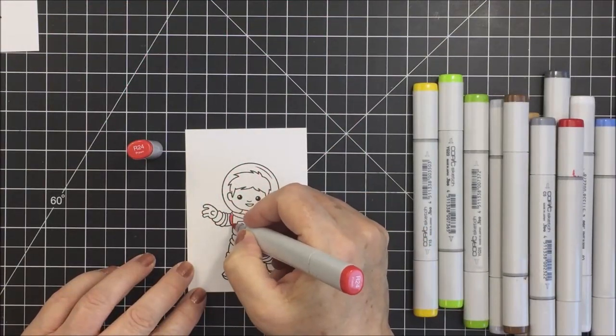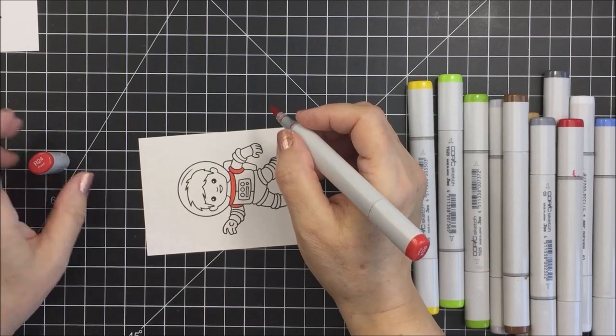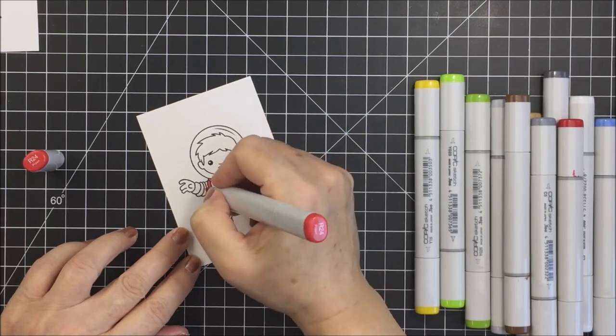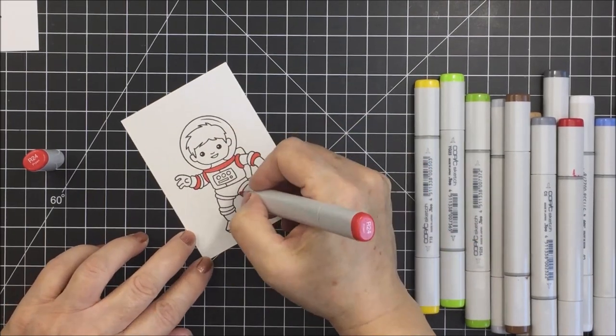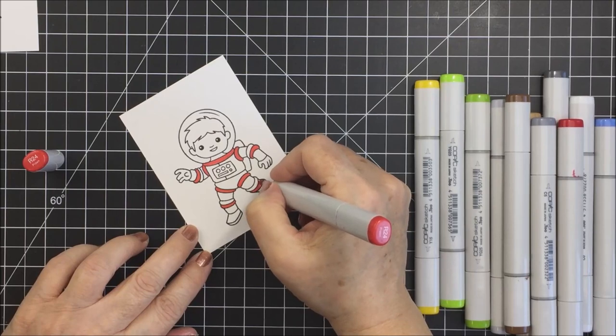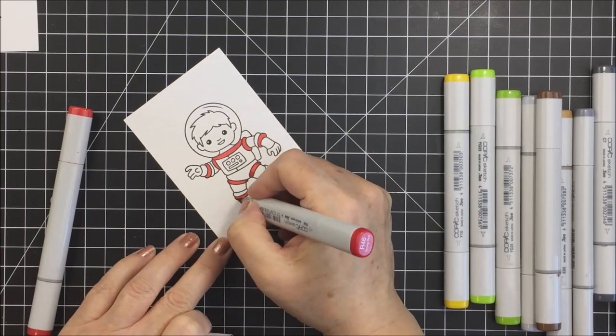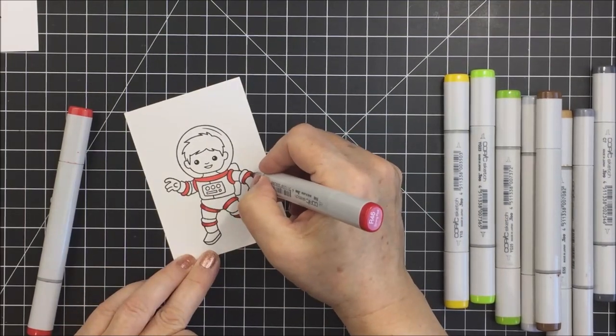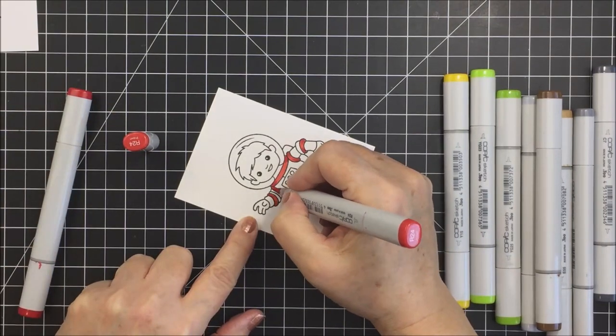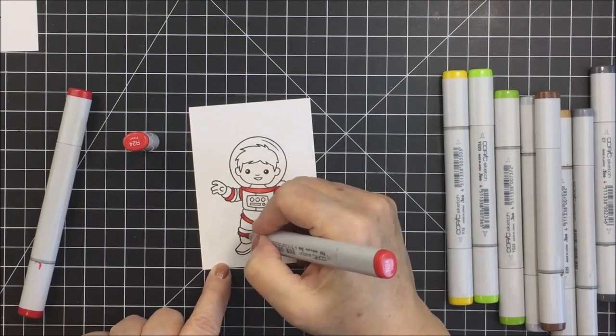If you want to watch basic Copic coloring, make sure you watch me because that is what you will get. I am going to use an R24 to do some red coloring on my astronaut's suit. I'm just going to use the red to color a few of the different stripes on the suit, and I'm going to do a little bit of shading with some R46. It's just some really simple shading. I'm just going to go into the edges of those different red areas, the outer edge, and then I'll just go back with the R24 and blend out that R46.